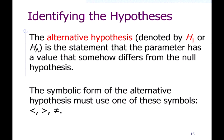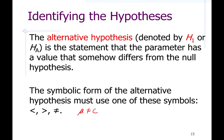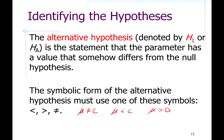The alternate hypothesis is going to be a statement that looks like: the mean equals some number, the mean is less than some number, or the mean is greater than some number. We could replace mean with any other parameter — proportion, standard deviation, and so on.